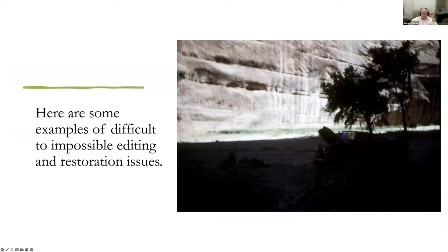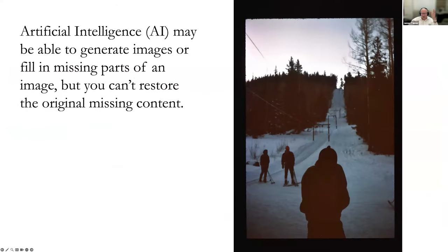These are difficult or impossible editing and restoration issues. The question is, now that we have artificial intelligence manipulating photos and actually creating images, why can't we do something with this photo? Because the photo has all of its information in that particular format — a piece of paper. Once I digitize it, the digital image has only the information contained in the original paper photo. So you can't restore missing content. I put this into Photoshop and worked with it for a while.